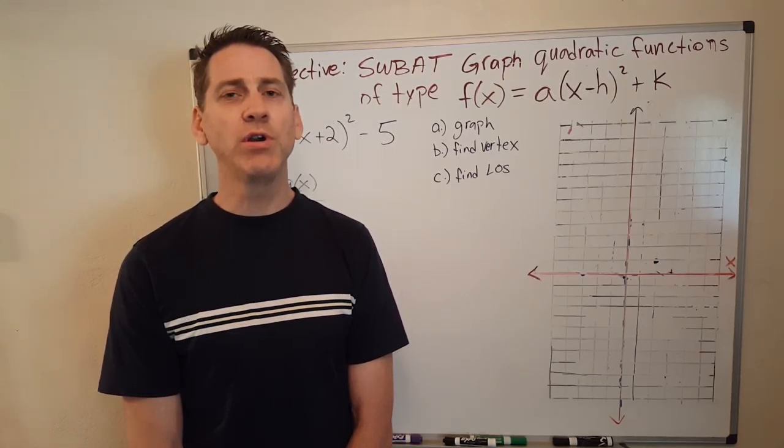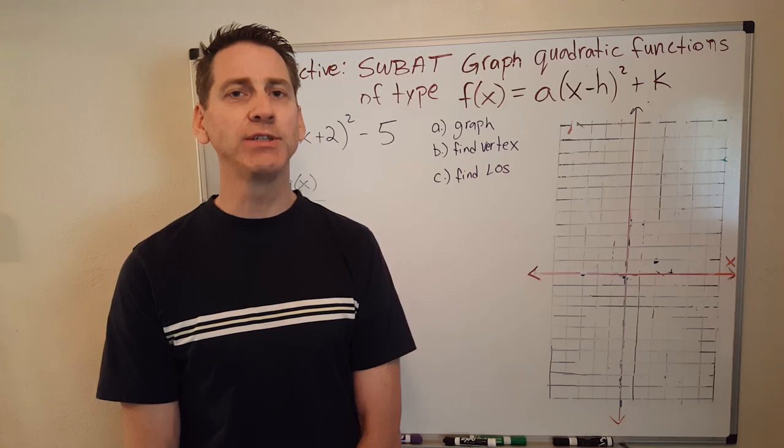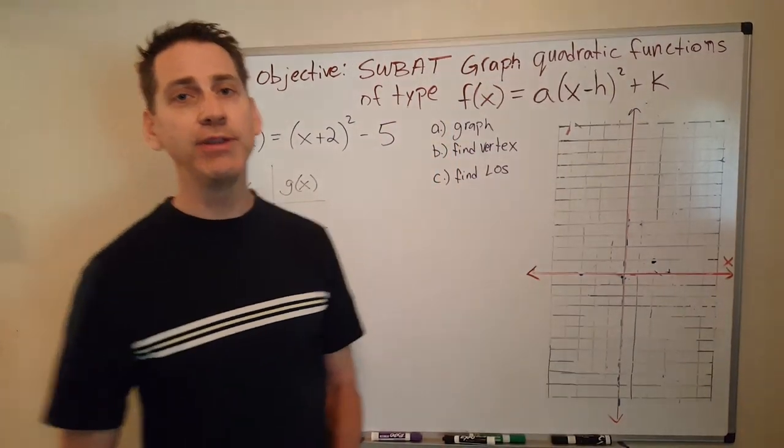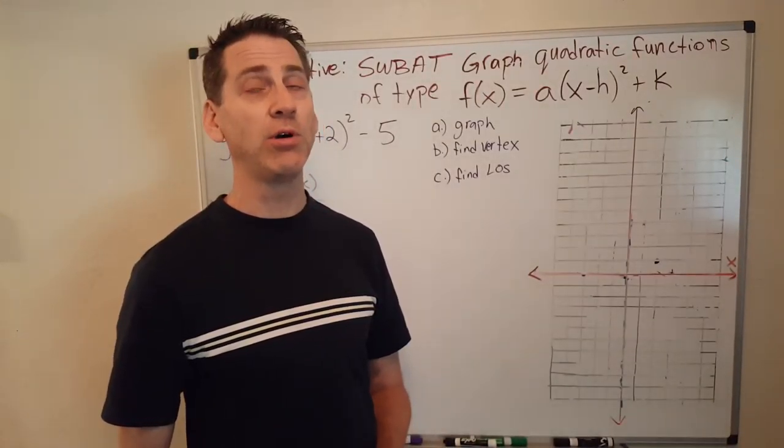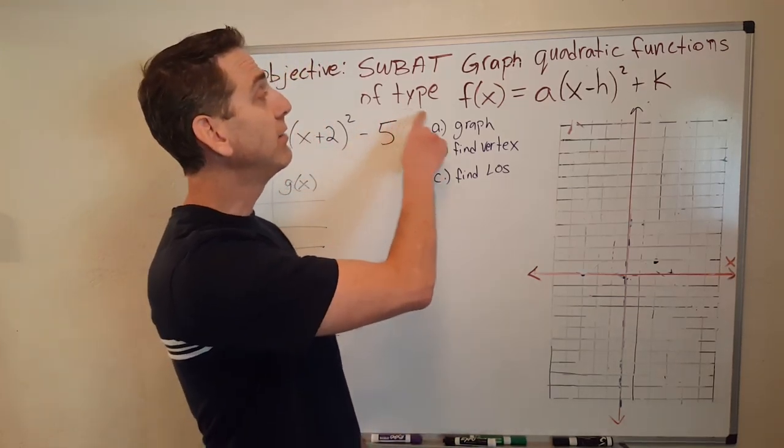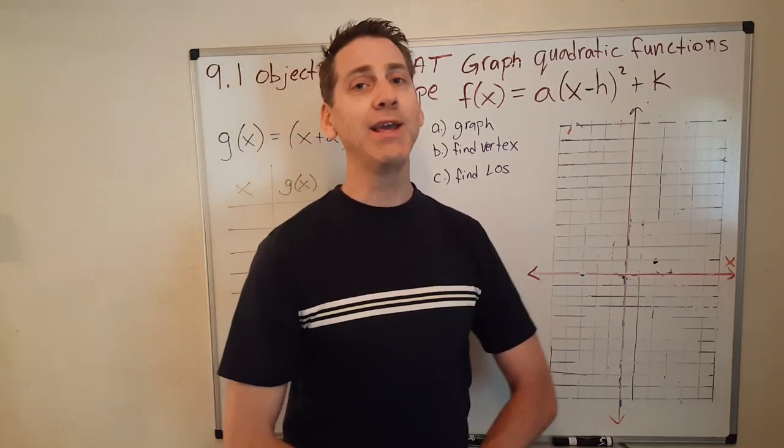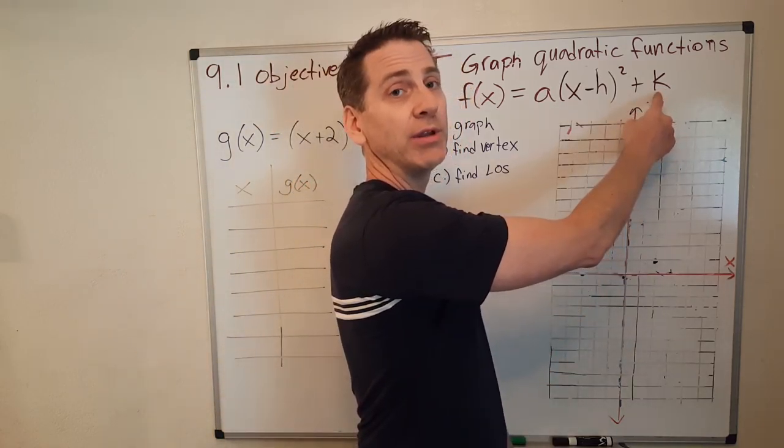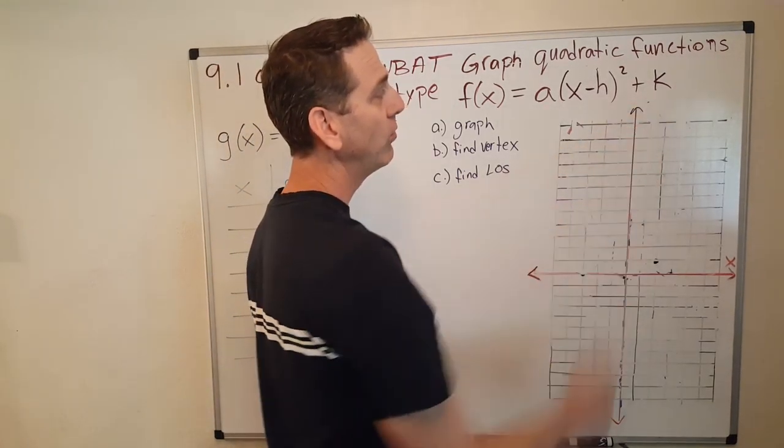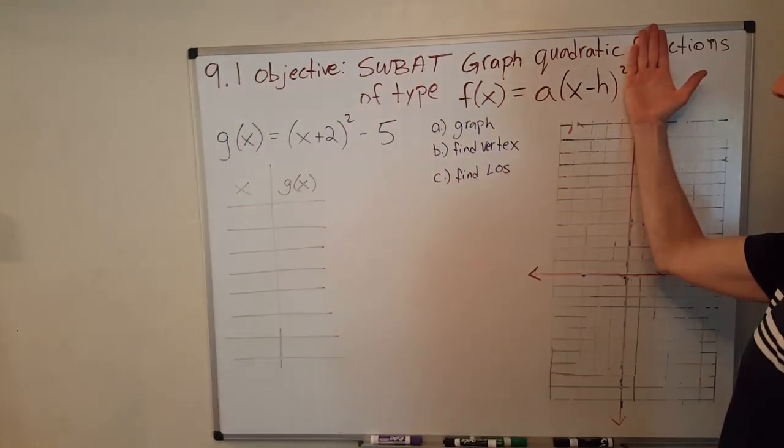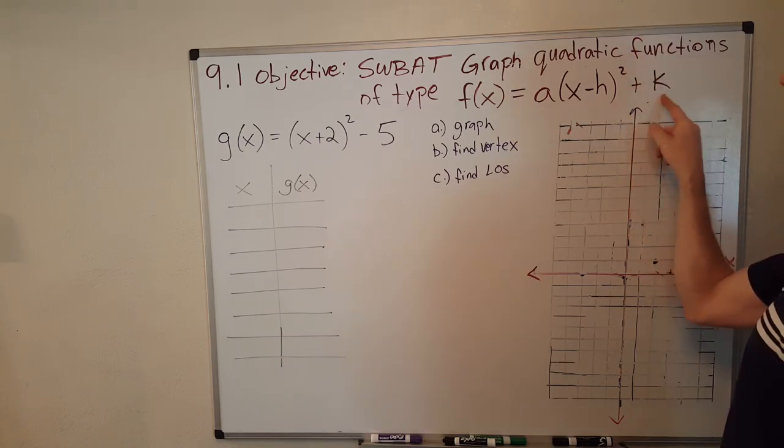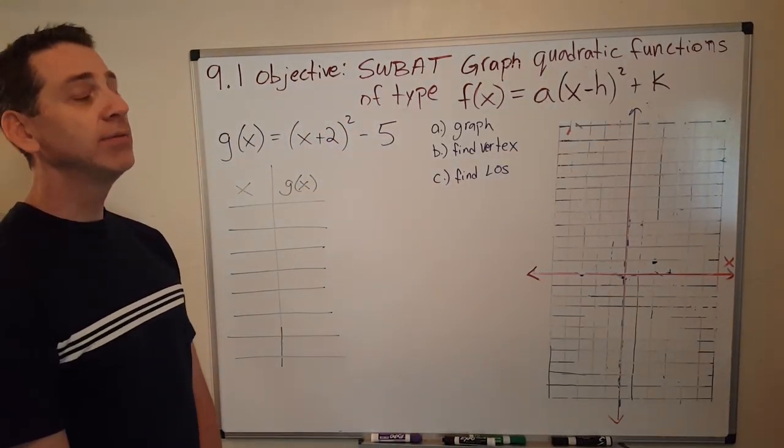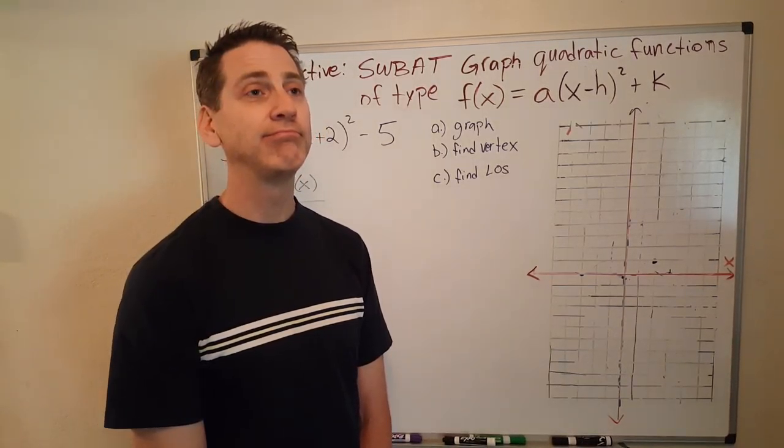Well hello there, we're back with some more algebra. We're graphing quadratic functions and we've actually had two other videos on this. This is our third video. So our objective in this video is that we're going to learn how to graph quadratic functions of type f(x) equals a times the quantity x minus h squared plus k. This is the new element to our function, this k. Last time we looked at just that, right? What's going to happen if we add a constant at the end? Well maybe you can pause this video and see if you can come up with a guess.